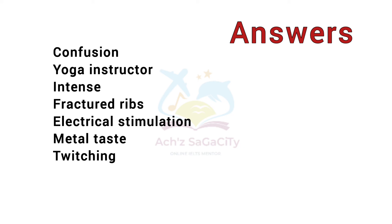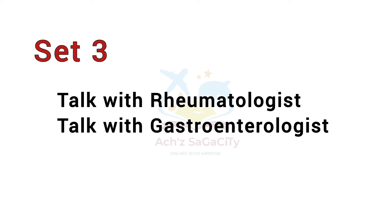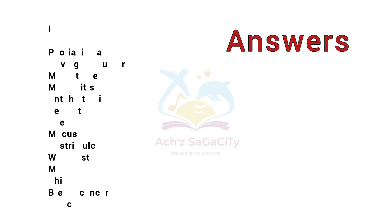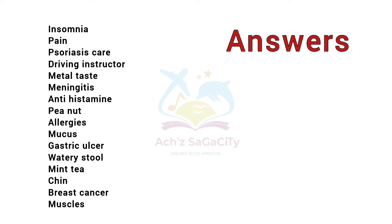You can also comment your answers below in the comment box. About the third set: talk with a rheumatologist and talk with a gastroenterologist. The answers shared include: insomnia, pain, psoriasis care, driving instructor, metal taste, meningitis, antihistamine, peanut allergies, mucus, gastric ulcer, watery stool, mint, tea, chin, breast cancer, and muscles.